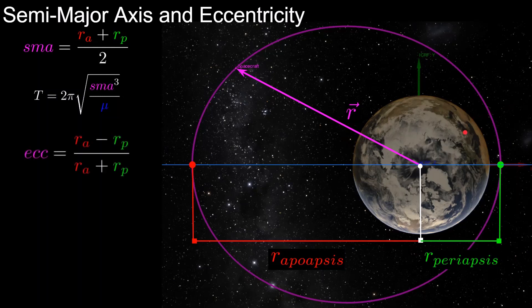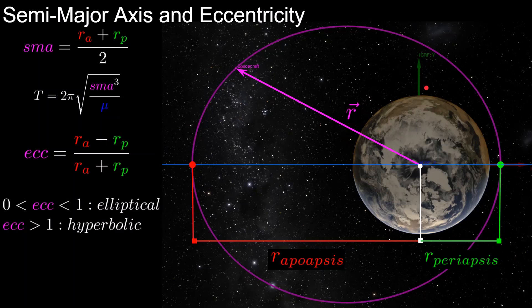Here's the equation calculating eccentricity using these two values. The equation must be greater than or equal to zero — it cannot be negative because apoapsis is defined to be greater than or equal to periapsis. This equation equals zero when apoapsis and periapsis are equal to each other, which only occurs in a circular orbit. This equation applies to elliptical orbits, defined as having eccentricity between zero and one. The closer to zero, the more circular; the closer to one, the more elliptical.